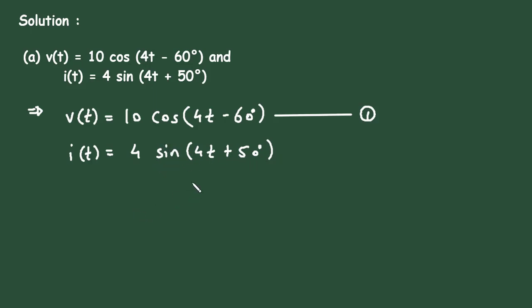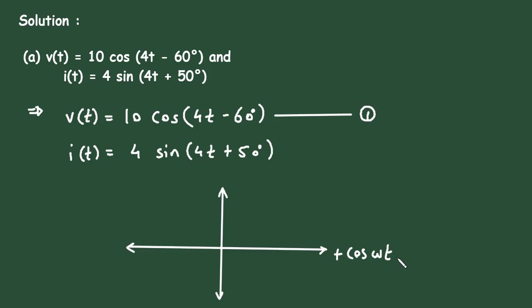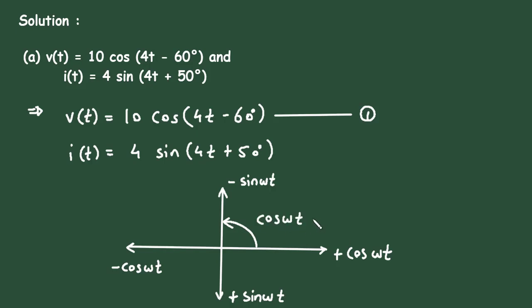The easiest way to remember the formula to convert from sine to cosine is to draw the graph. Here, +cos(ωt) is at 0°, +sin(ωt) is at 90°, −sin(ωt) is at 180°, and −cos(ωt) is at 270°. Moving counterclockwise is the positive direction, so cos(ωt + 90°) = −sin(ωt).